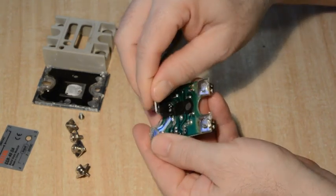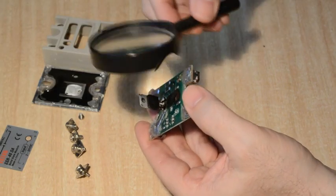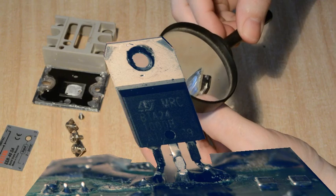The triac can be carefully straightened so that the markings can be read, which in this case show a BTA24, which is a 24 amp triac, not the 40 amp, as would be expected from the solid state relay faceplate.